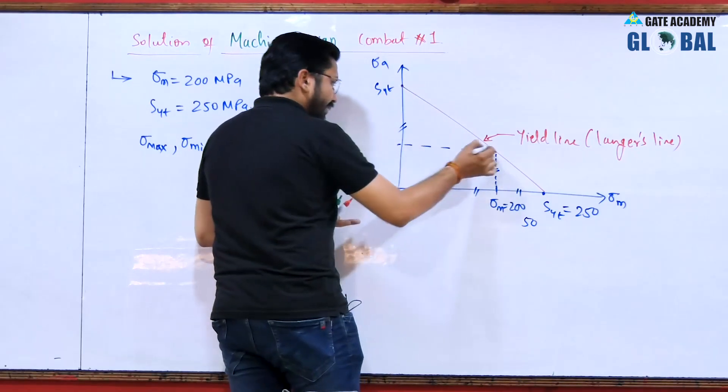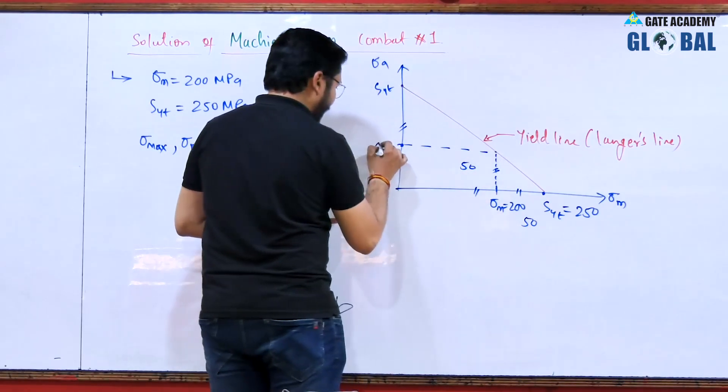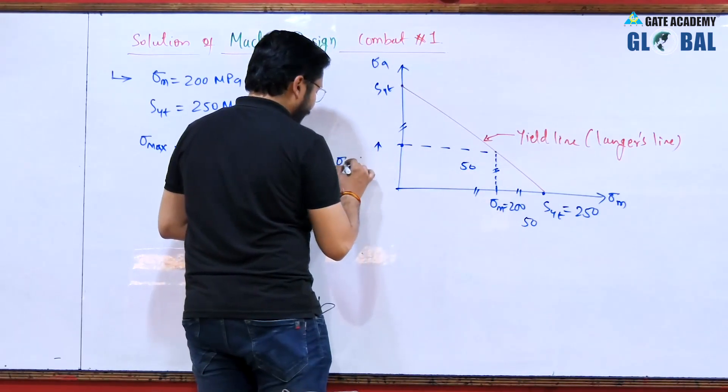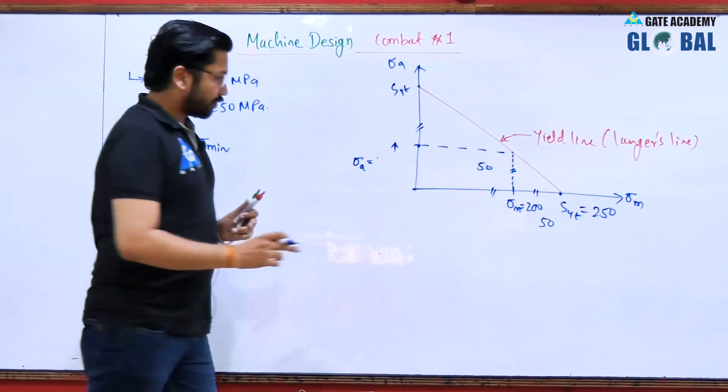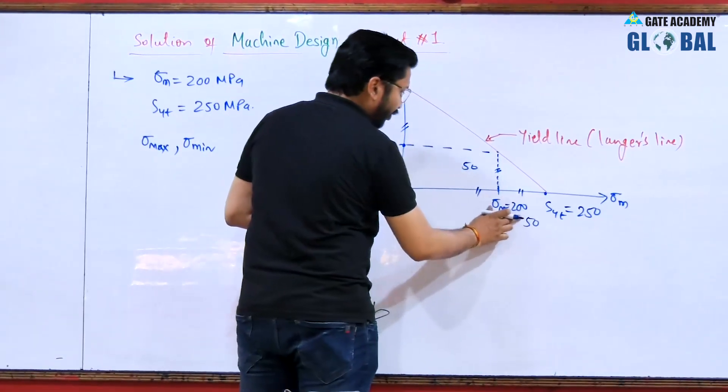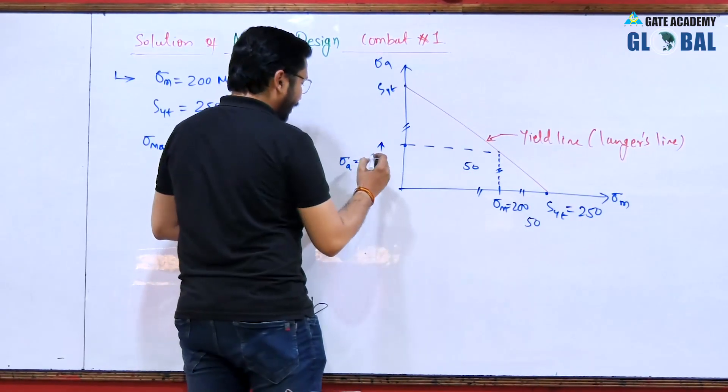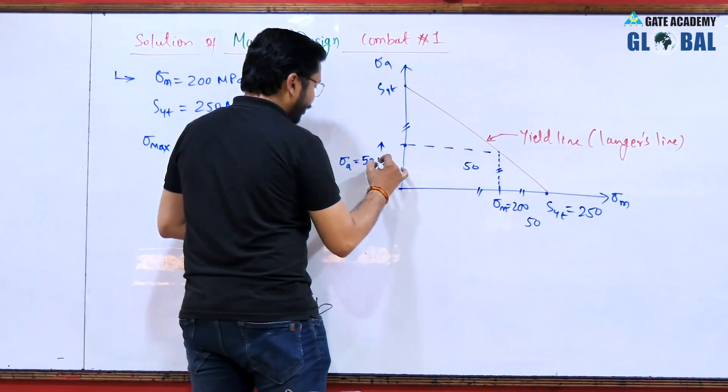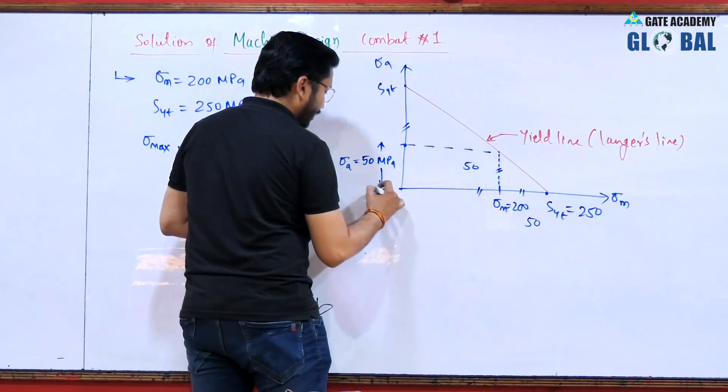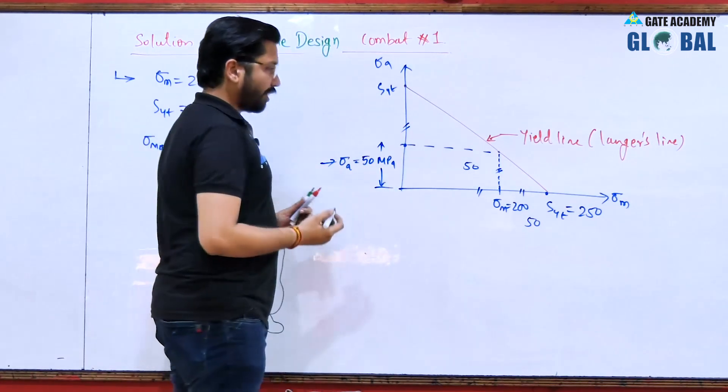From the diagram this will be the stress amplitude sigma a corresponding to the given value of sigma m. For the value of 200 mega Pascal this condition will be giving you a stress amplitude of 50 mega Pascal. So sigma m is 200 mega Pascal, sigma a is 50 mega Pascal. Now it is very easy to calculate sigma max and sigma minimum.